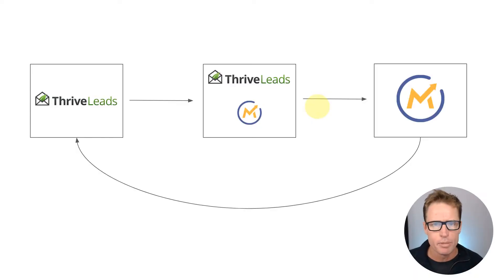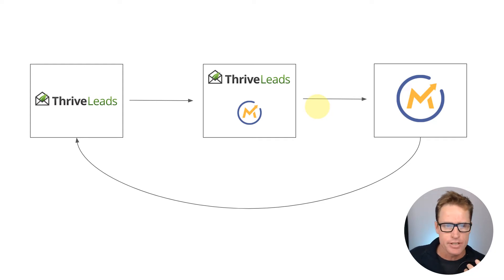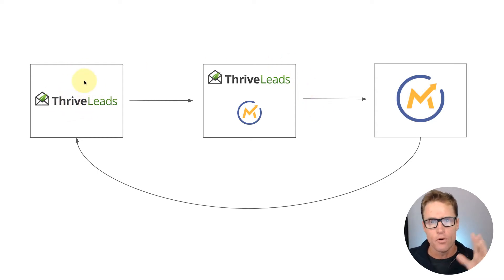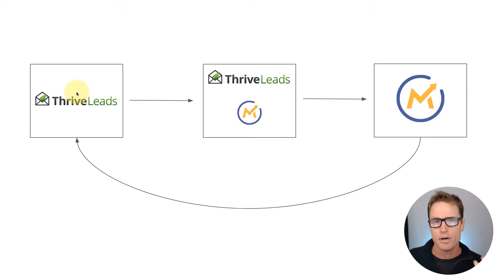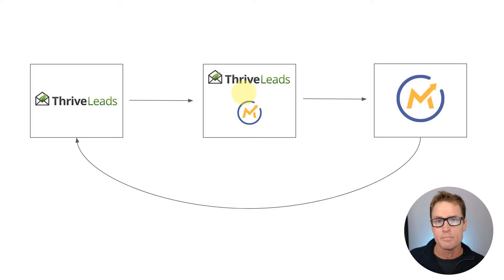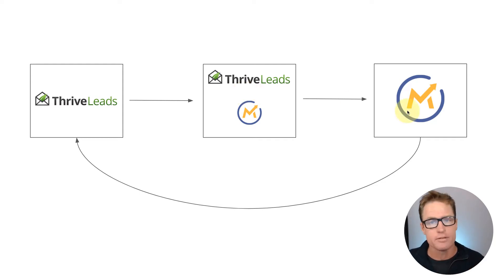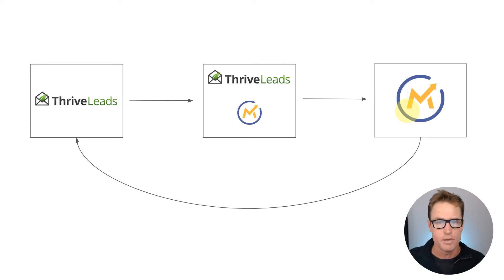Before we get building, let's look at an overview of what we're trying to achieve. This diagram represents the three big chunks we need to work through. First, we need a landing page with a Thrive Leads form. That form will pass the submitted information via URL to a thank-you page. That thank-you page will have a hidden Mautic form that captures the URL-passed data, auto-submits itself, and inserts the contact natively into Mautic — giving us all the triggers, tags, and automations that come with it.